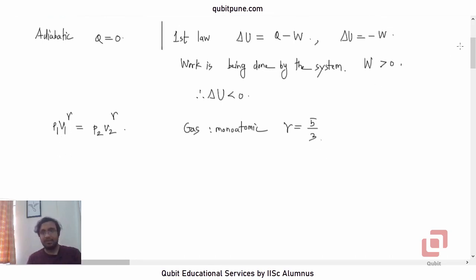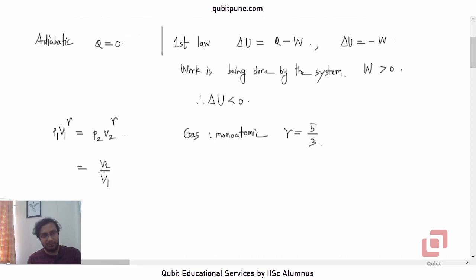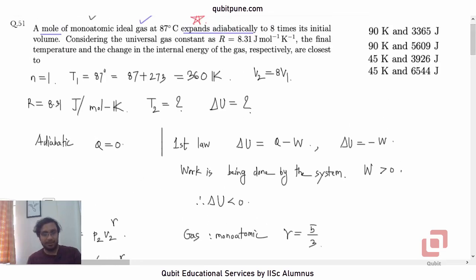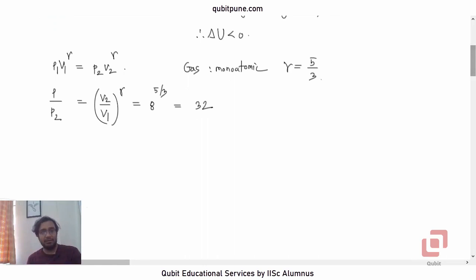From this we can write, since we know the volume ratio V2 = 8V1, we can say (V2/V1)^gamma = P1/P2. So V2/V1 is 8, and gamma is 5/3. We know that 8 is 2^3, so this will be (2^3)^(5/3) = 2^5 = 32.